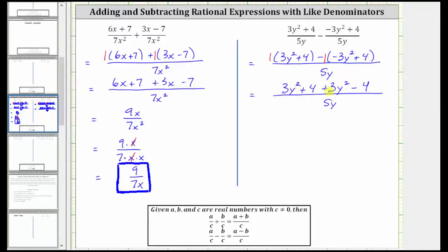Now combining like terms in the numerator, 3y squared plus 3y squared is 6y squared, and then 4 minus 4 is 0. The expression simplifies to 6y squared divided by 5y. And again, this does simplify because there's a common factor of y between the numerator and denominator. If it's helpful, we can write 6y squared as 6 times y times y, and 5y is 5 times y. Here we can see the common factor of y between the numerator and denominator. y divided by y simplifies to one, and therefore the simplified difference is just 6y over 5. I hope you found this helpful.